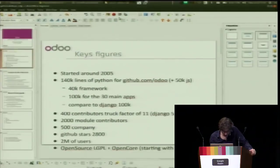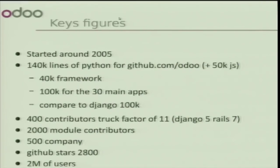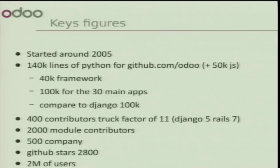Odoo is a framework and also a set of applications built on that framework. The total codebase is around 140k lines of code — 40k lines are the framework and the rest is the 30 main apps. We are a company named Odoo, we edit software also named Odoo, and there's a very active community around it extending the apps we ship.